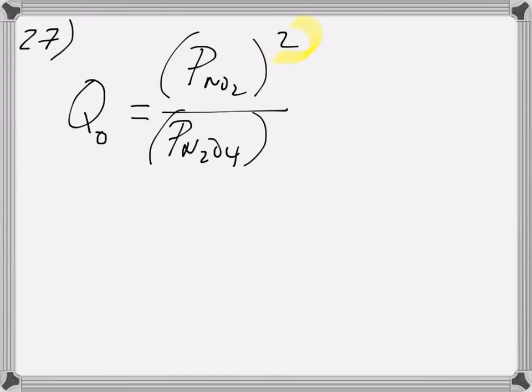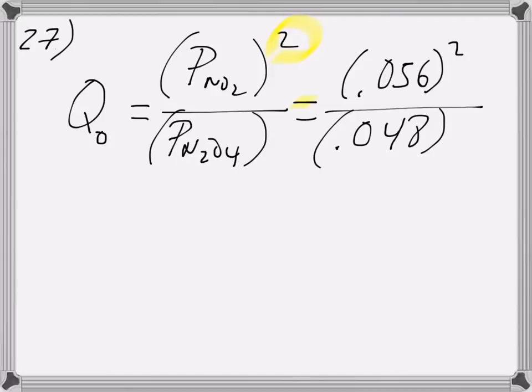You've got to remember to square this. That's probably the biggest mistake that most students make, is they forget to square things. In the problem they tell us that the initial concentration of that is 0.056, and they tell us that the initial concentration of this is 0.408.